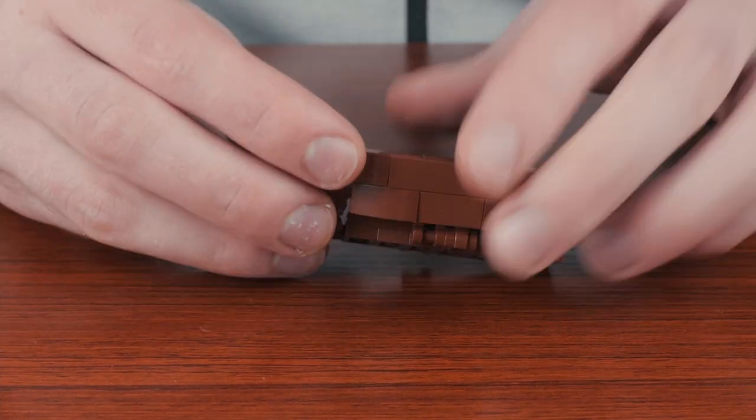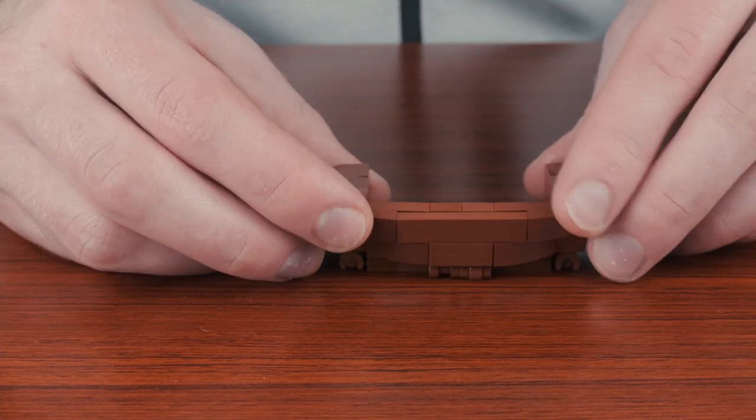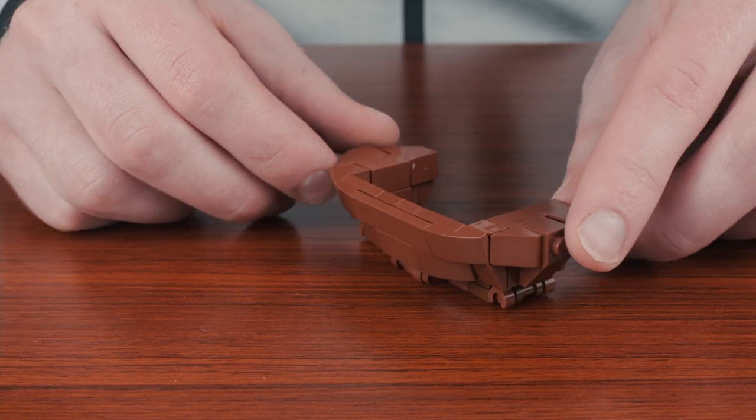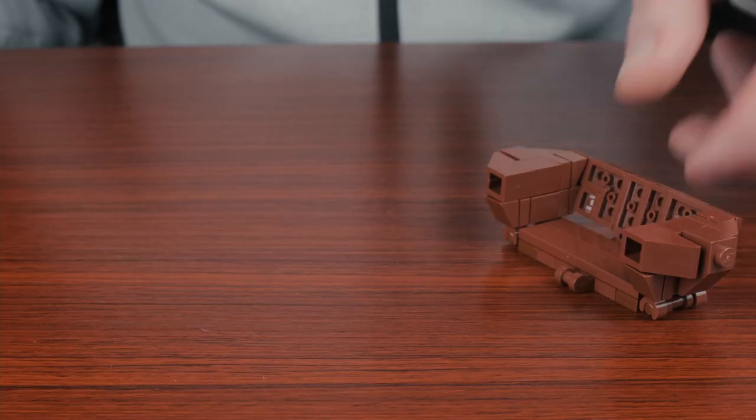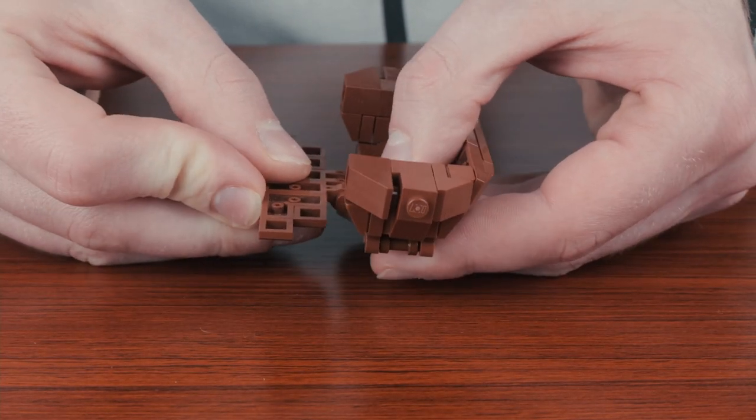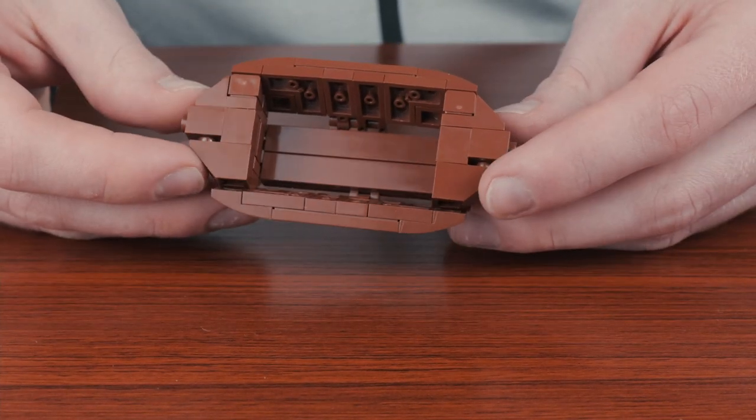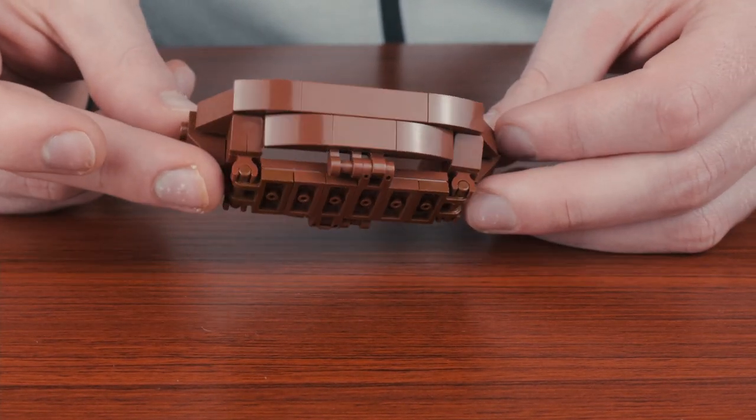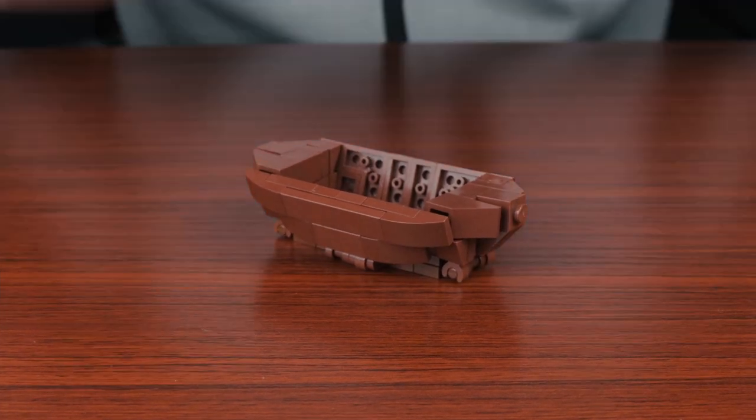Then we'll just clip that onto the side, and again just add another of the same assemblies to the other side. And there you go, we've got a nice little boat.